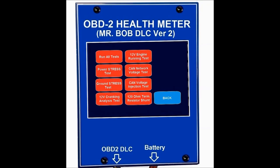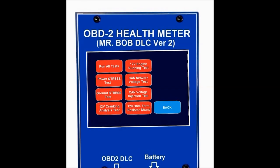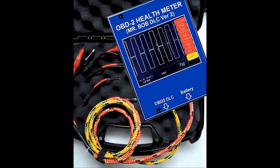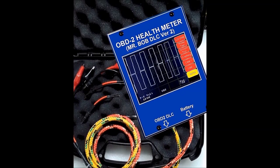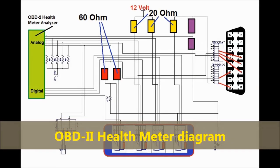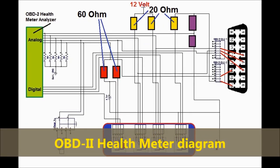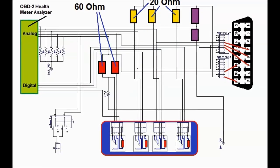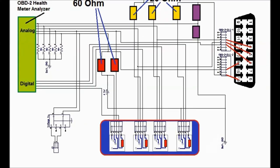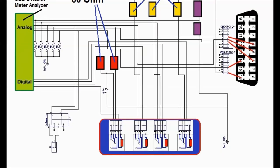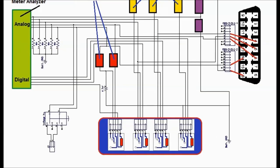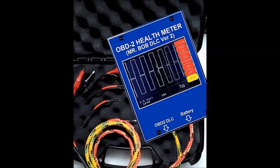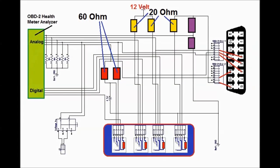This unit is loaded with electronics that stress the DLC power, chassis ground, sensor ground, and pin 16 power. Oftentimes you have issues with sensors and grounds that cause all kinds of problems with scanner readings — and there's nothing actually wrong with the components, just a faulty ground or power. The unit has big yellow 20-ohm resistors on top; the unit shorts the ground and power and measures. There's also a computer inside with a screen and you can substitute the 60 ohm termination resistors with this unit.